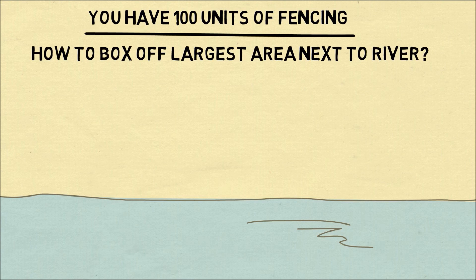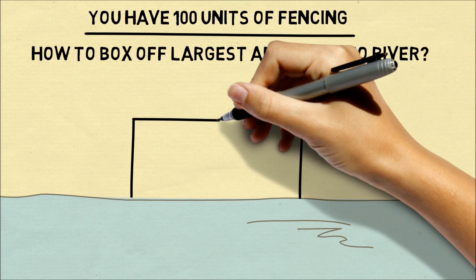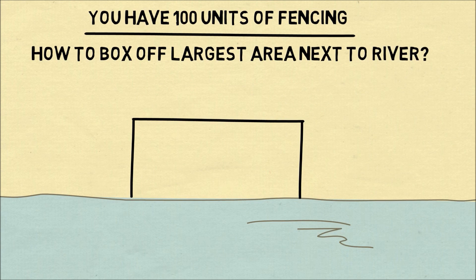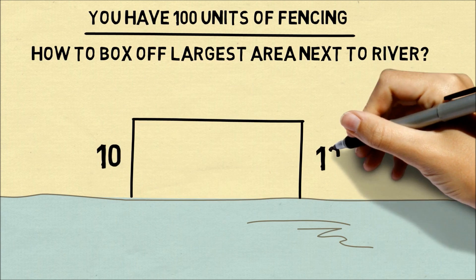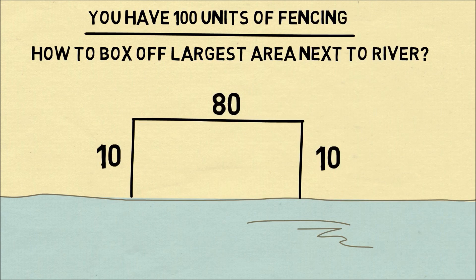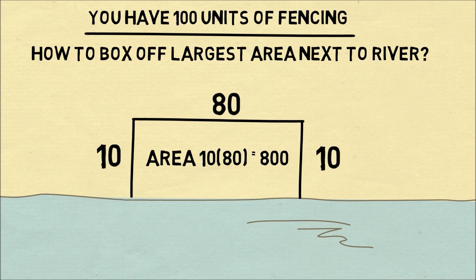So specifically, you want to enclose an area with just three sides of a rectangle and what's between that and the river should be the largest area possible. So one way you could divide up the hundred units of fencing is to have 10, 10 for the length and 80 for the width and that'll give you an area of 800. So the puzzle is to box off the largest area possible.